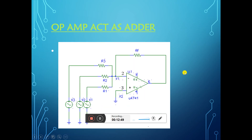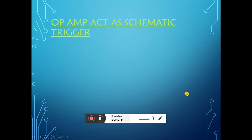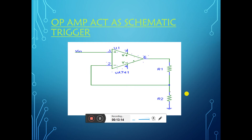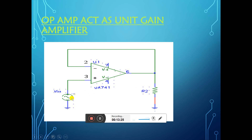Another application of operational amplifier: the op-amp acts as an adder. If V1, V2, V3 are applied to the input side, we get the output in addition form. The op-amp also acts as a subtractor — it subtracts two input voltages, generating an output of V2 minus V1. Next is the Schmitt trigger — the sinusoidal waveform is converted into a square waveform; this is known as a Schmitt trigger. Next is the unity gain amplifier or voltage follower — the input voltage is exactly reproduced at the output. The non-inverting terminal is connected to the supply and pin number 6 is directly connected to pin number 2. This connection is known as a unity gain amplifier or voltage follower circuit.